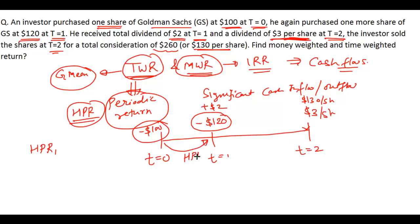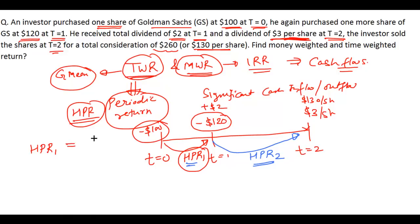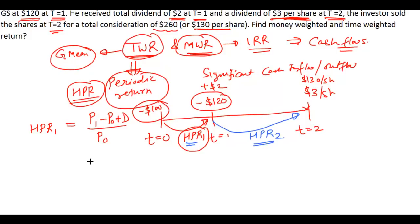We have to find out the holding period returns for the various periods — the first period and the second period. The formula for holding period return is: HPR = (P1 - P0 + Dividend) / P0. That is your holding period return formula.